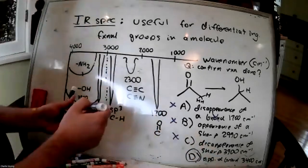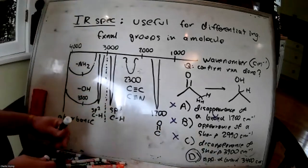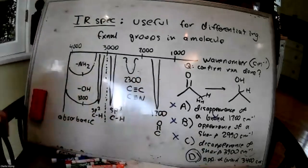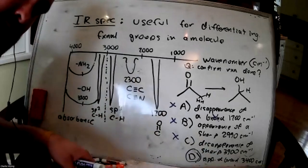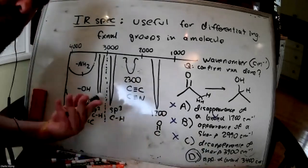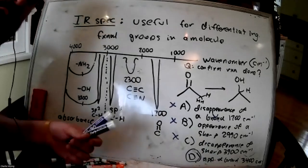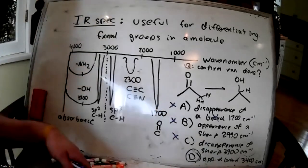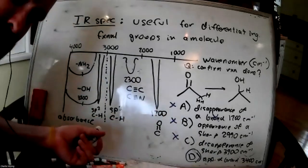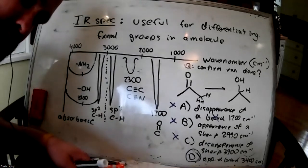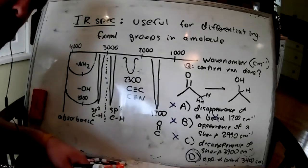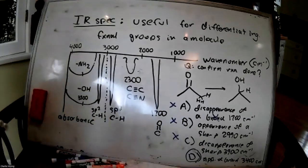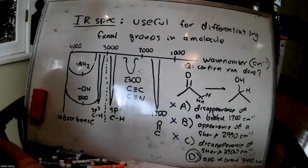This is another way the MCAT might try to trick you — they could give 3,400 instead of exactly 3,500. It's still the best answer because none of the other choices were viable. So it's good to have values memorized, but know that they could switch it up slightly — like saying 1,750 or 1,650 for a carbonyl.